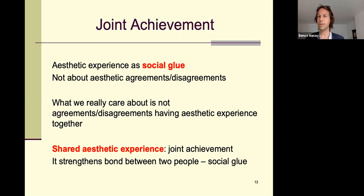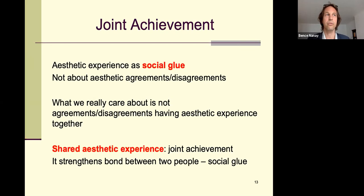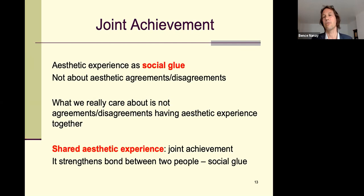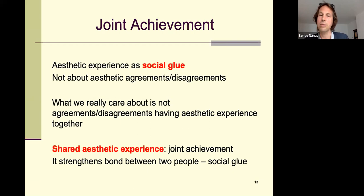In analytic aesthetics, the most influential way the social dimension has appeared is in explaining aesthetic agreements and disagreements. I want to emphasize — and I did some earlier work on this — that although figuring out what we agree and disagree about in the aesthetic domain can be important for our social interactions, what we really care about is not aesthetic agreement and disagreement.